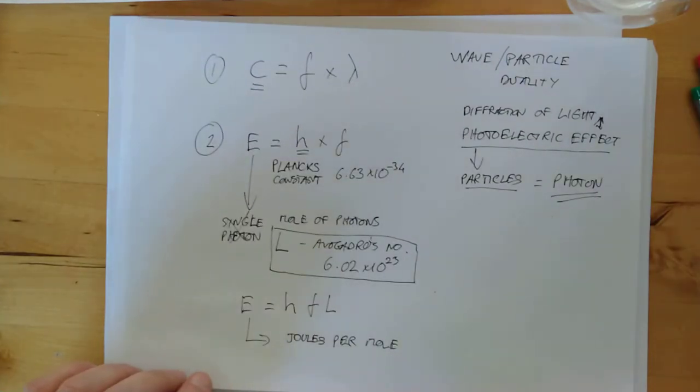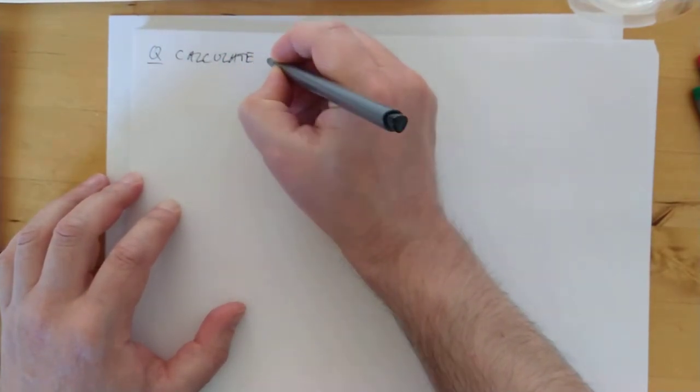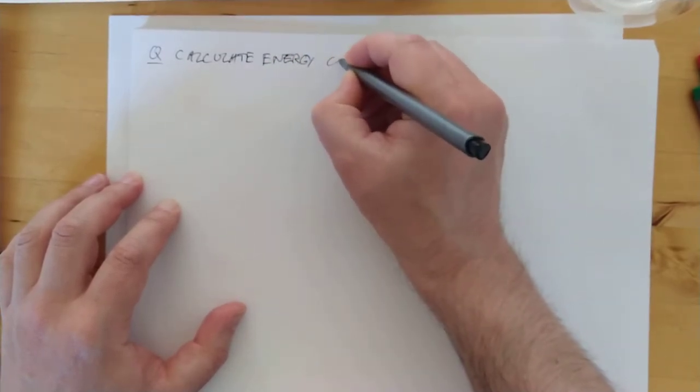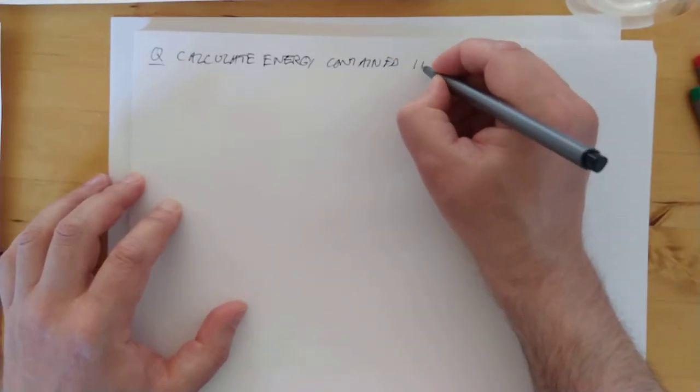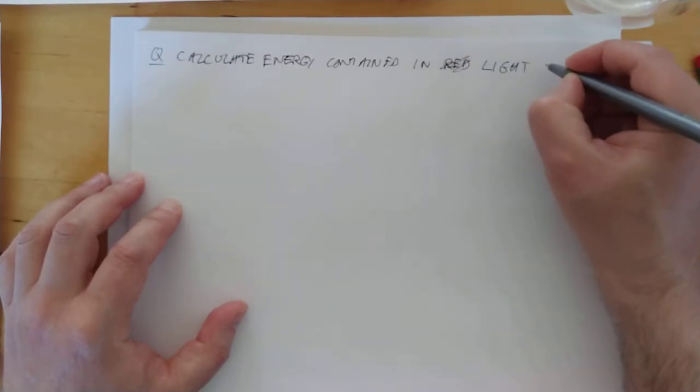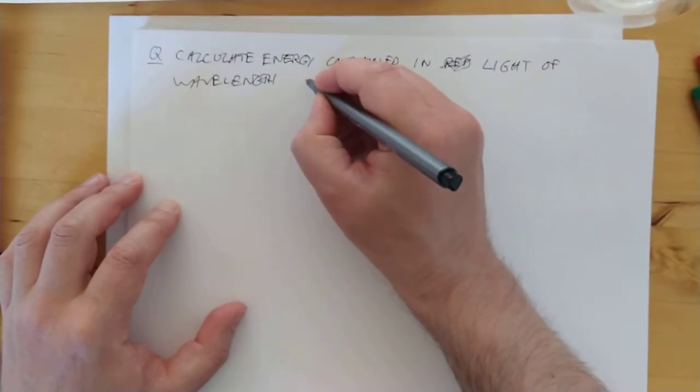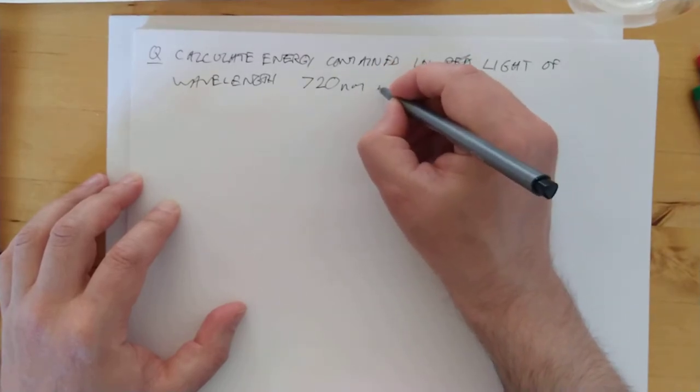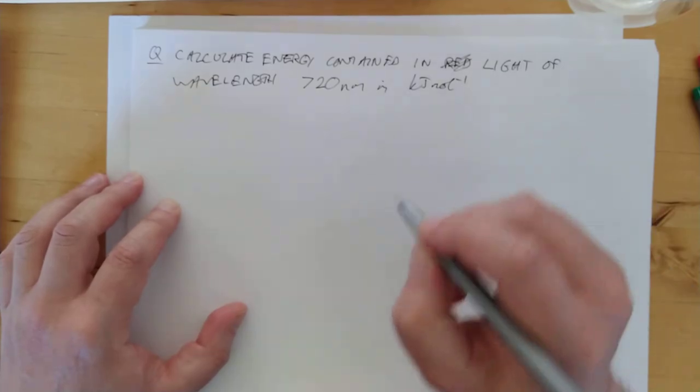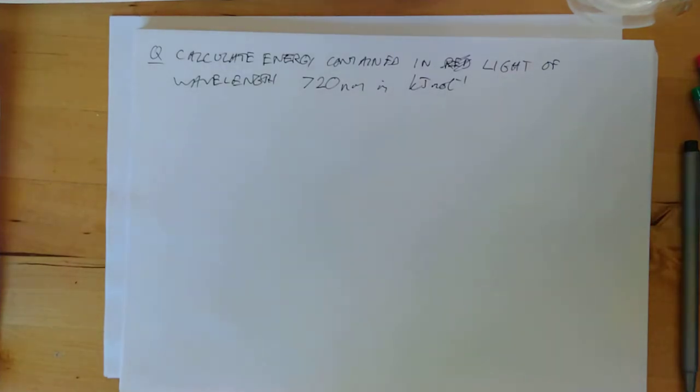Let's have a look at an example calculation, I think, for this, folks. So a typical question would say, calculate the energy contained in light of wavelength 720 nanometers in kilojoules per mole. Okay. You are free, of course, at this point to go and do this yourself. So if you want to, you can pause the video, go and try this calculation, come back and see what you get.